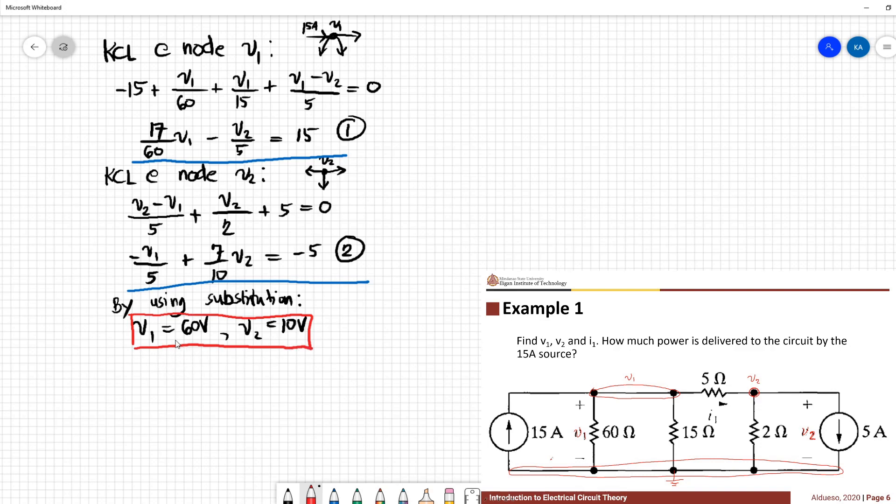So what is the value of I1? I1, looking at the figure, is just V1 minus V2 all over 5, so we have 60 minus 10 over 5, so we have 10 amperes.